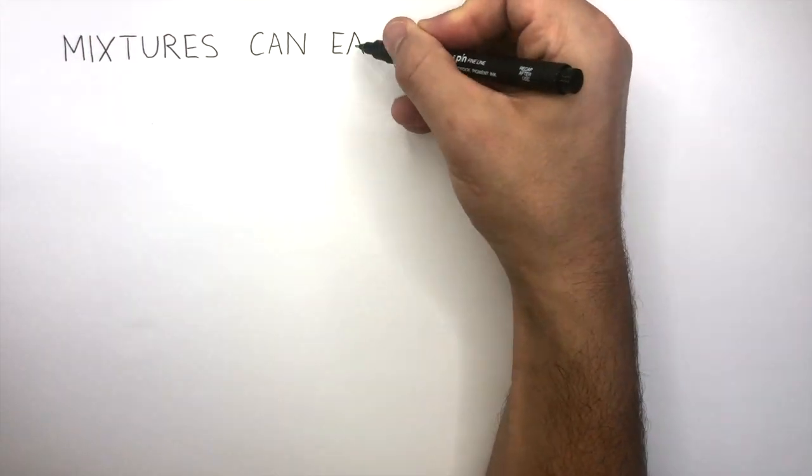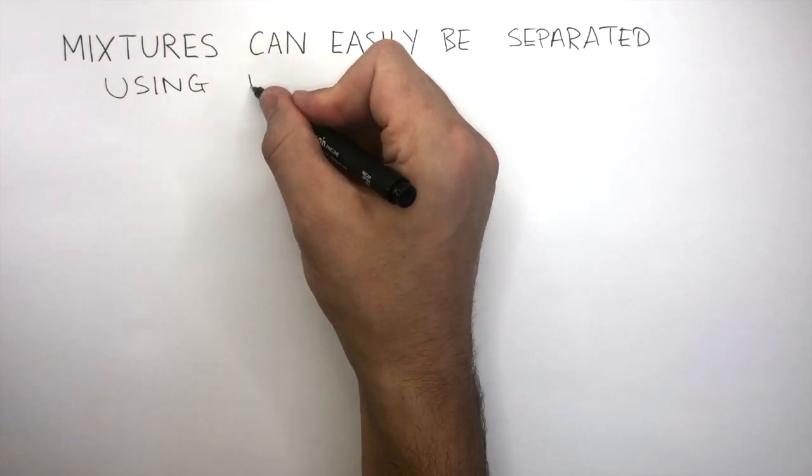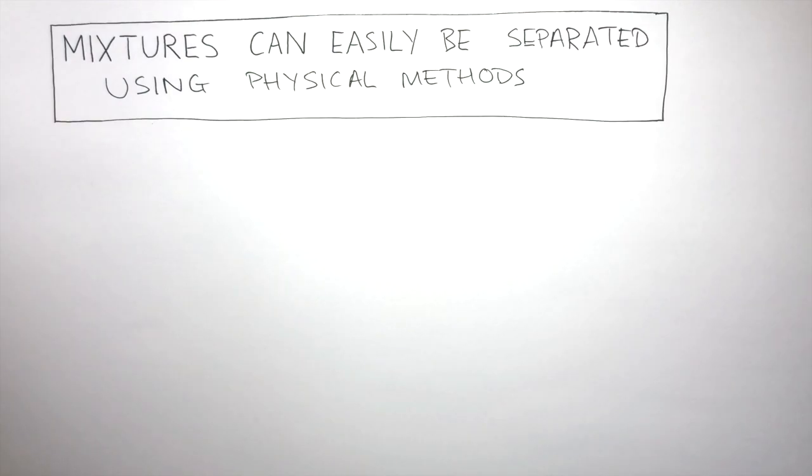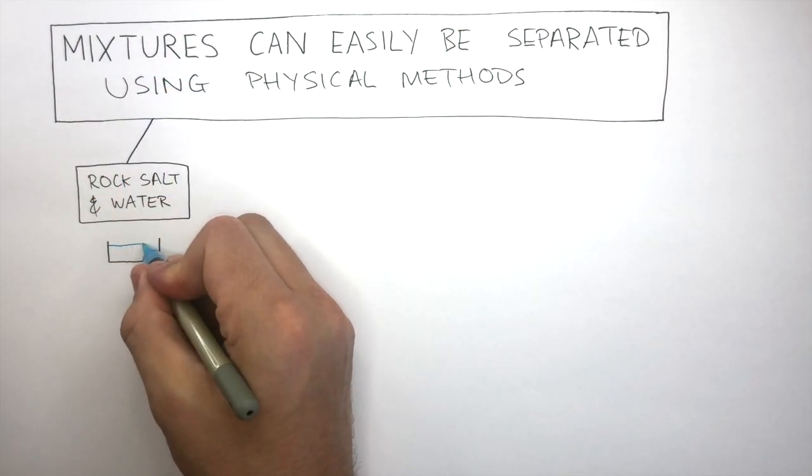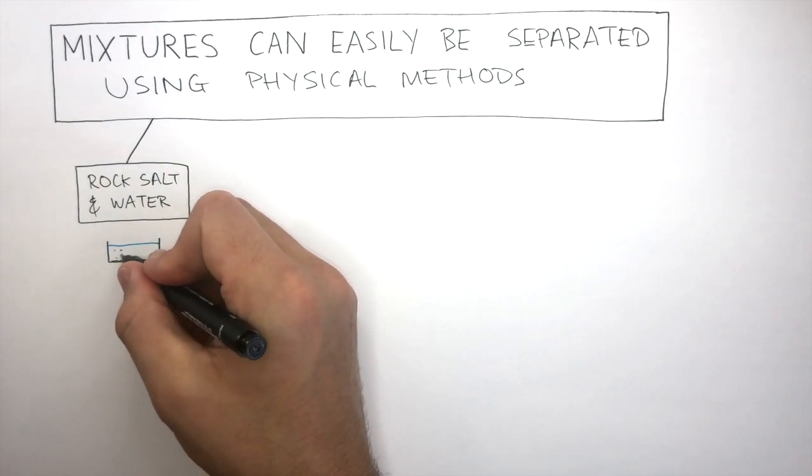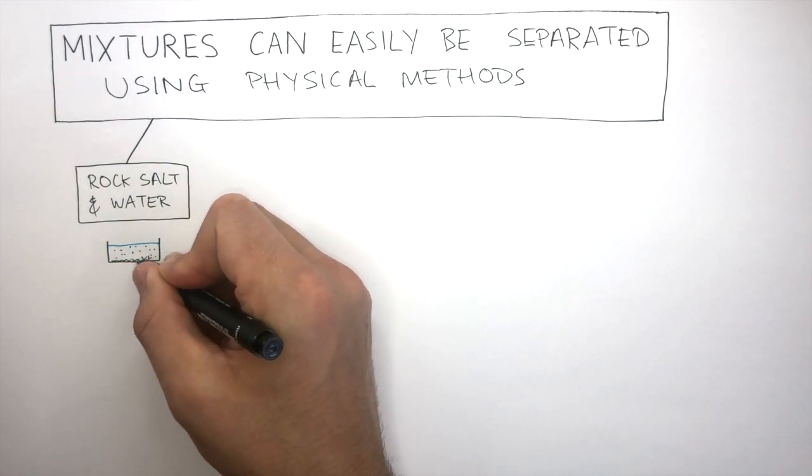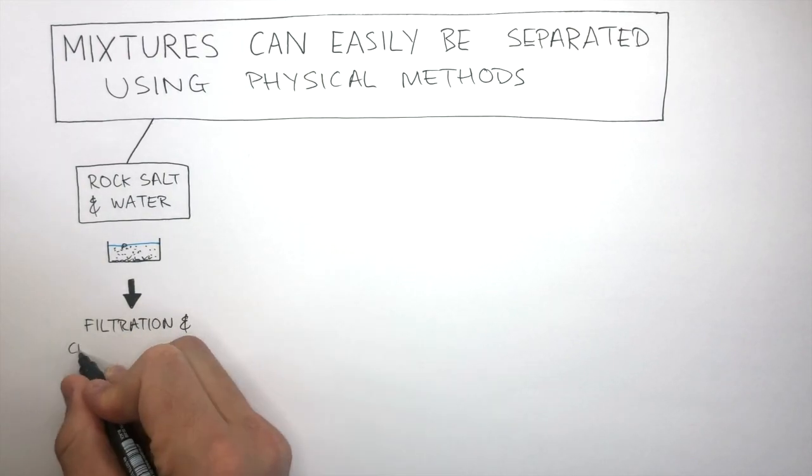Mixtures can easily be separated using physical methods. I'm now going to introduce some physical methods, which you will learn about in much more detail in later videos. Rock salt and water is a mixture of water, rock, and dissolved salts. This can be separated using filtration and crystallization.